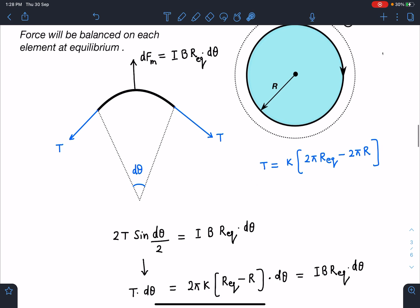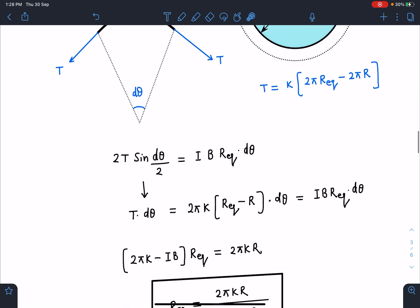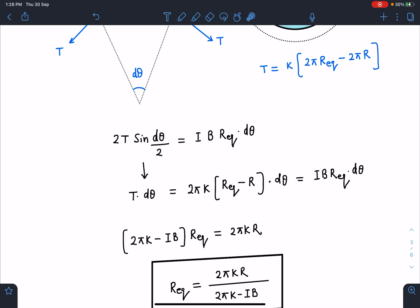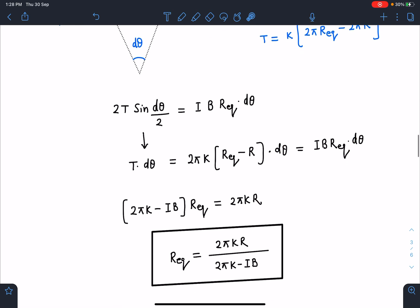So I can write here 2T sin(dθ/2), which horizontal will cancel and net force towards the center will balance IB R dθ. When I substitute the value, for small angle sine theta becomes theta, so this becomes T dθ and this will become 2πK[R_eq - R₀] dθ. This we can cancel out and here IB R_eq dθ. When I simplify this, I am going to get R_equilibrium = 2πKR₀/(2πK - IB).